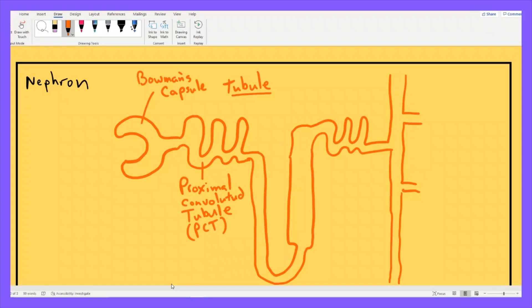This is the tubule of the nephron. So I'm going to label its parts in orange. First, the head of the snake is called Bowman's capsule. Then, the snake's neck, this curly part right here, that's called the proximal convoluted tubule, or PCT. It's proximal, meaning it's close to the head. It's convoluted, which means it twists and turns.